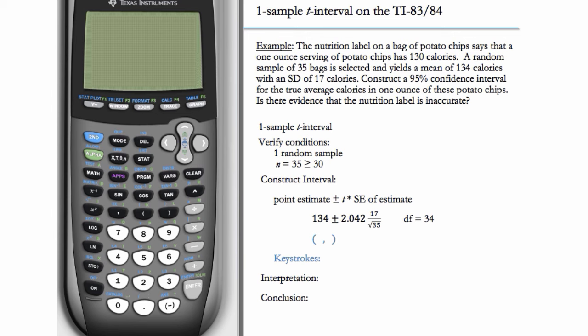In this example, the nutrition label on a bag of potato chips says that a one ounce serving of potato chips has 130 calories. A random sample of 35 bags is selected and yields a mean of 134 calories with an SD of 17 calories. Construct a 95% confidence interval for the true average calories in one ounce of these potato chips. Is there evidence that the nutrition label is inaccurate?